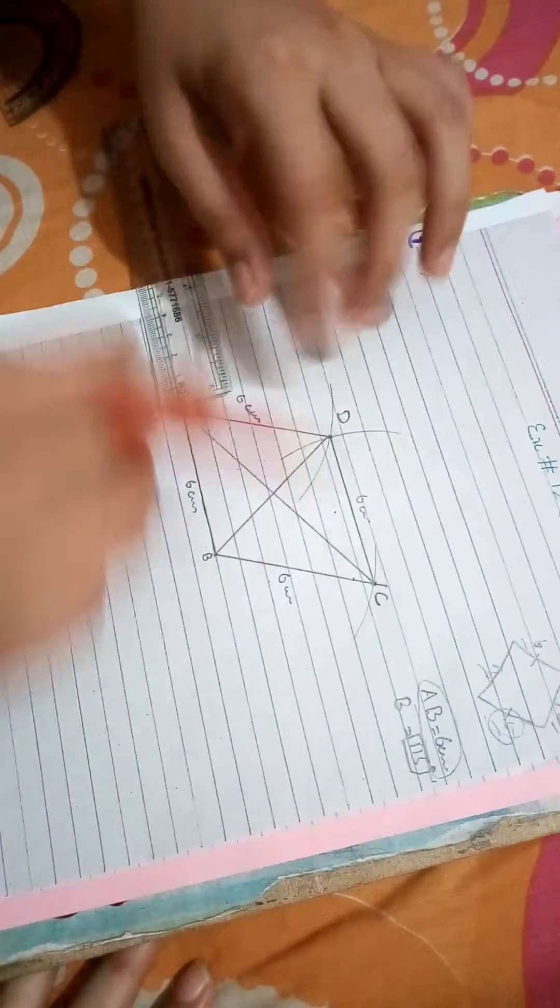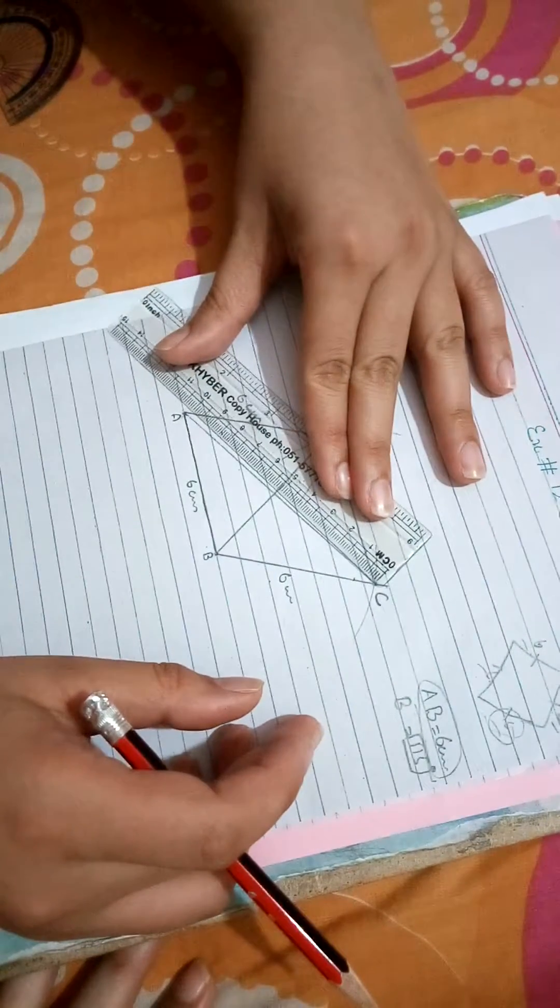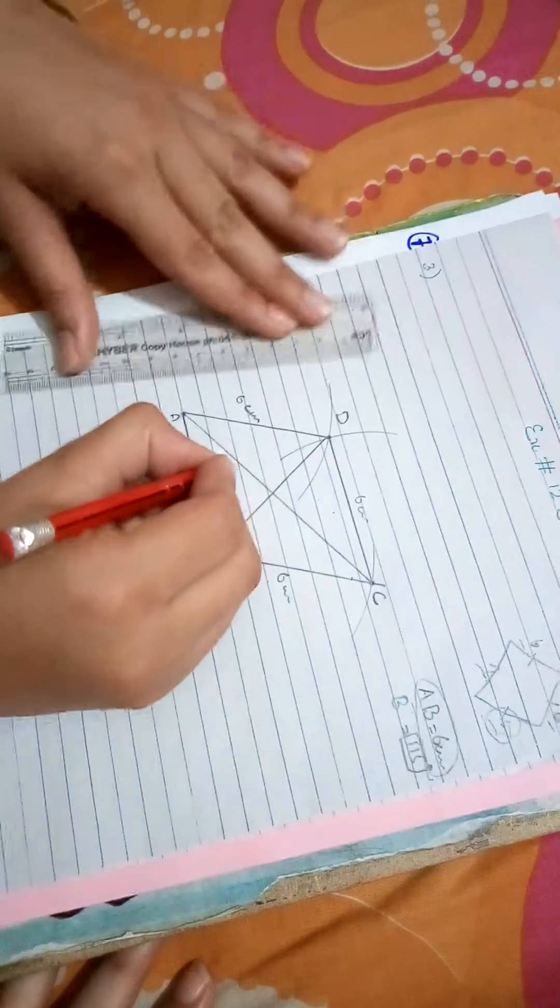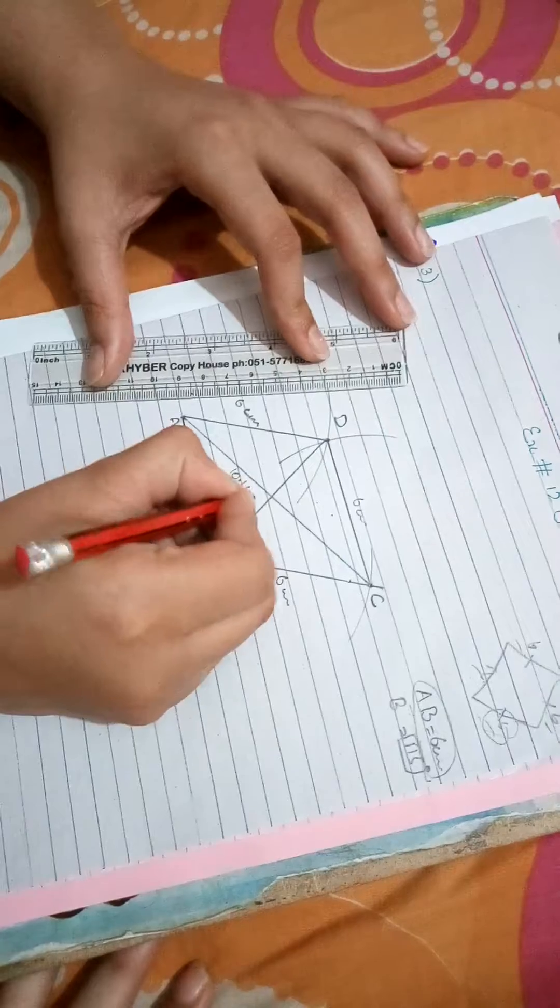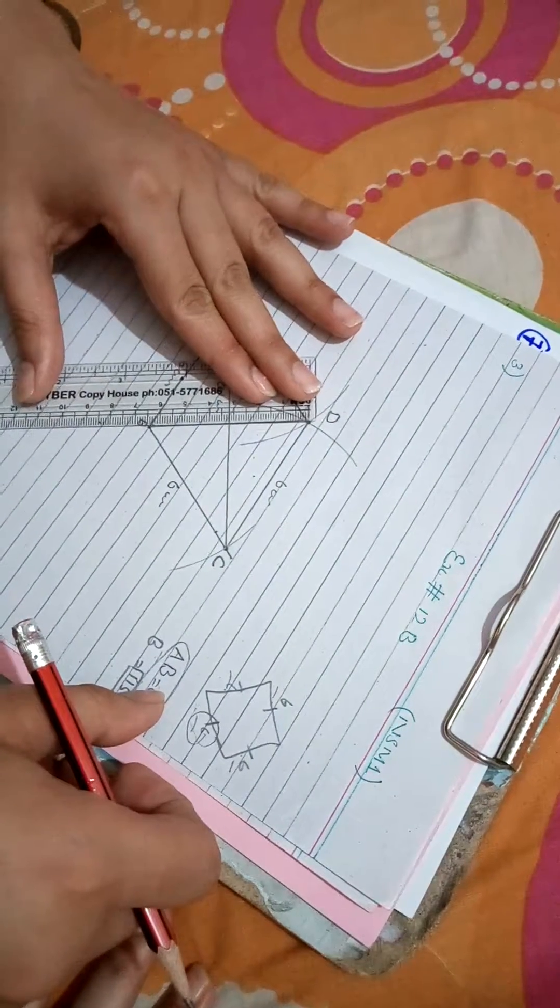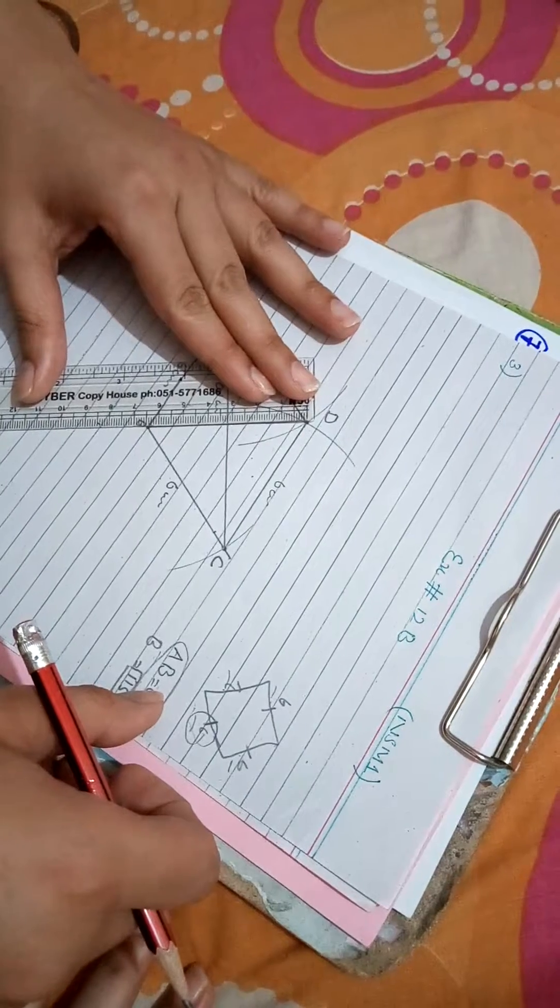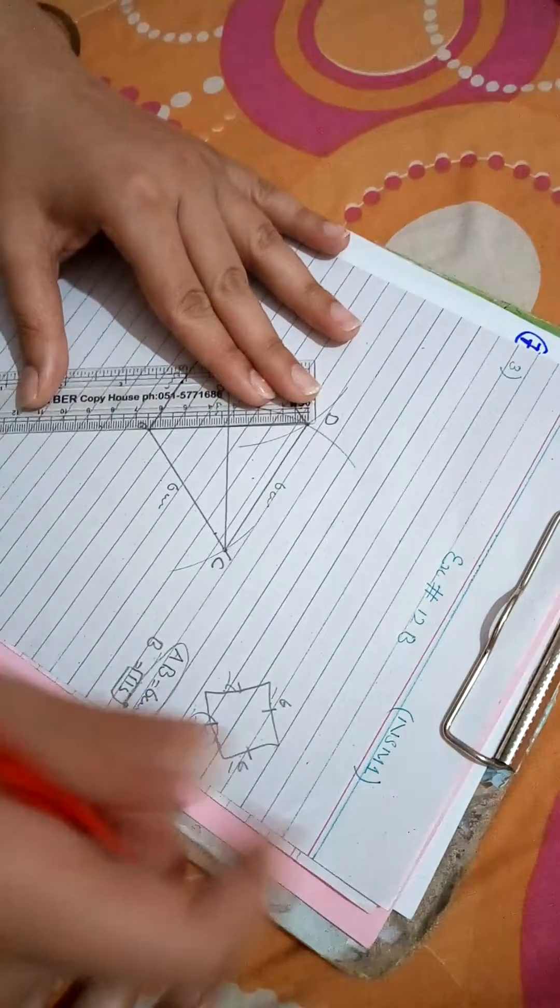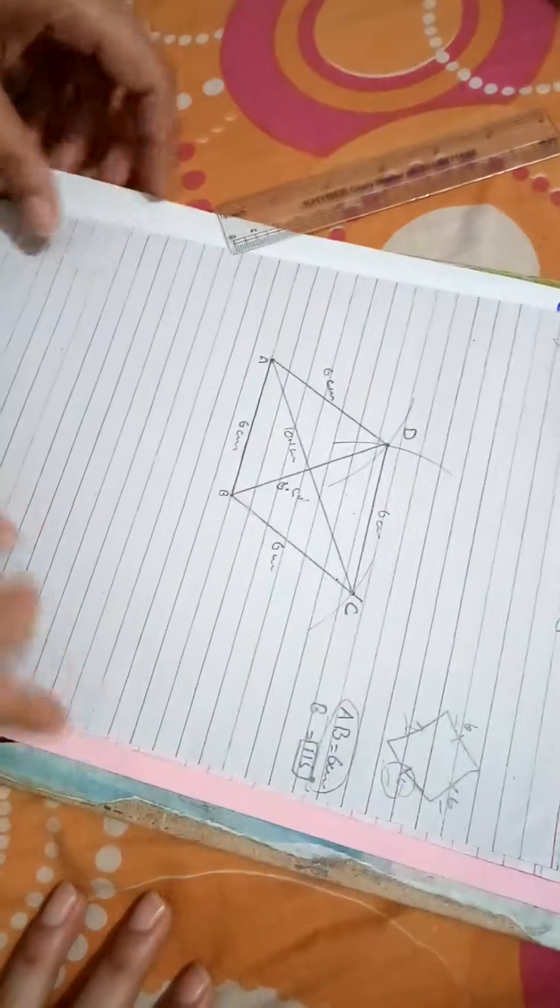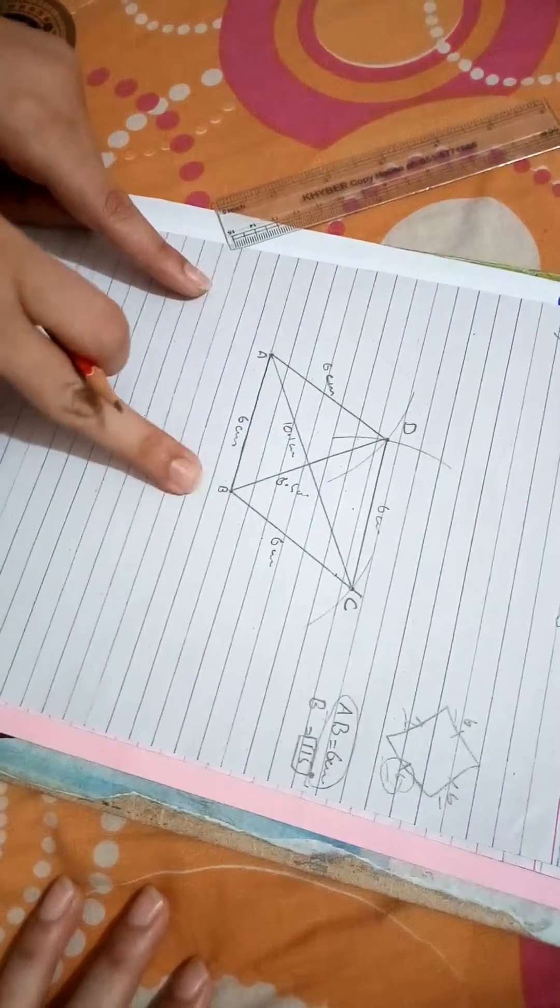Measure the length of C to A, that is 10.1 centimeters, and from D to B, that is 6.5 centimeters. So this is the complete solution of Question 3.